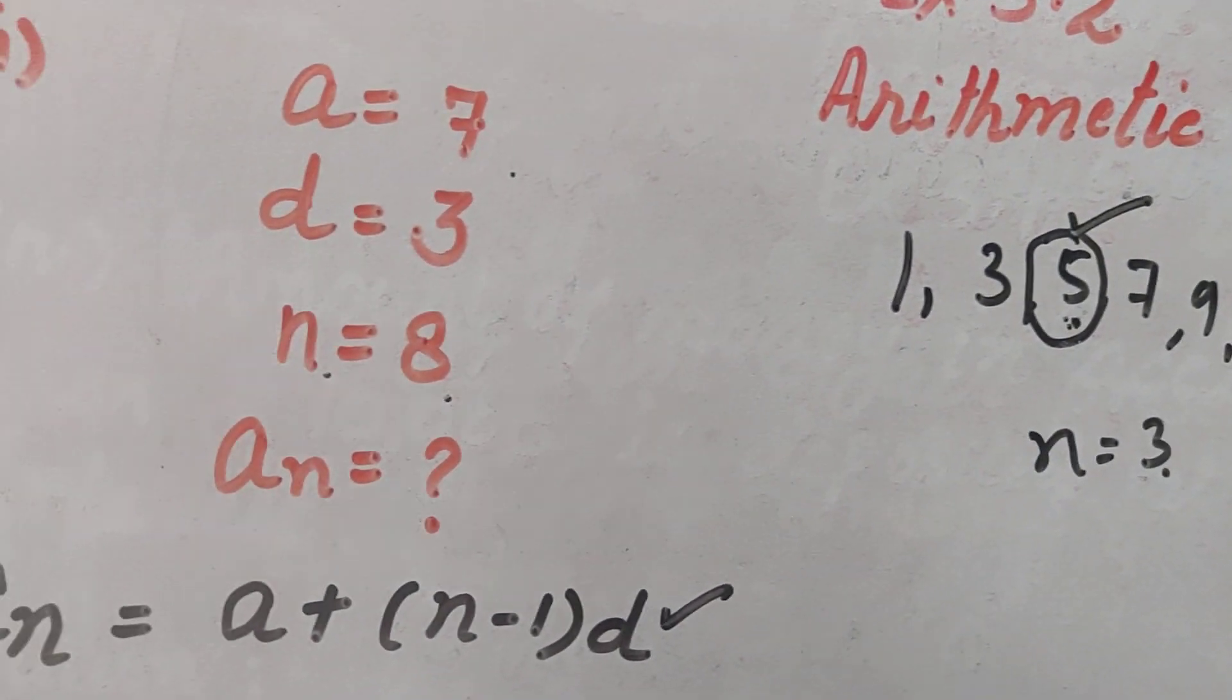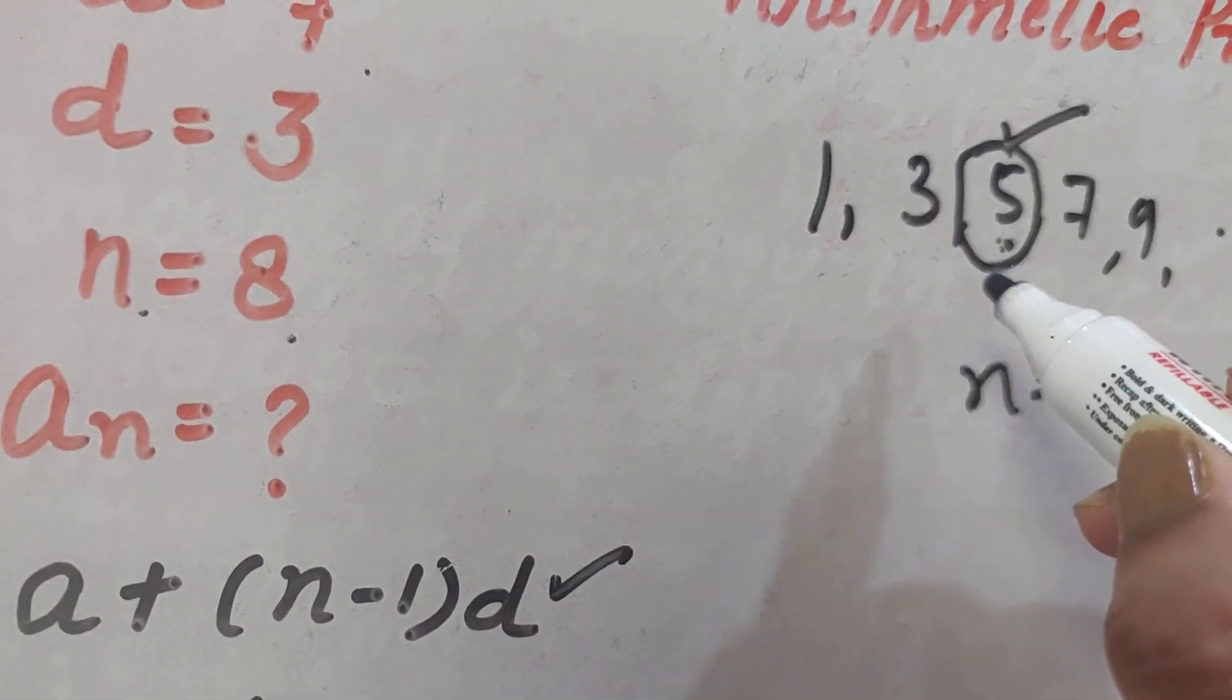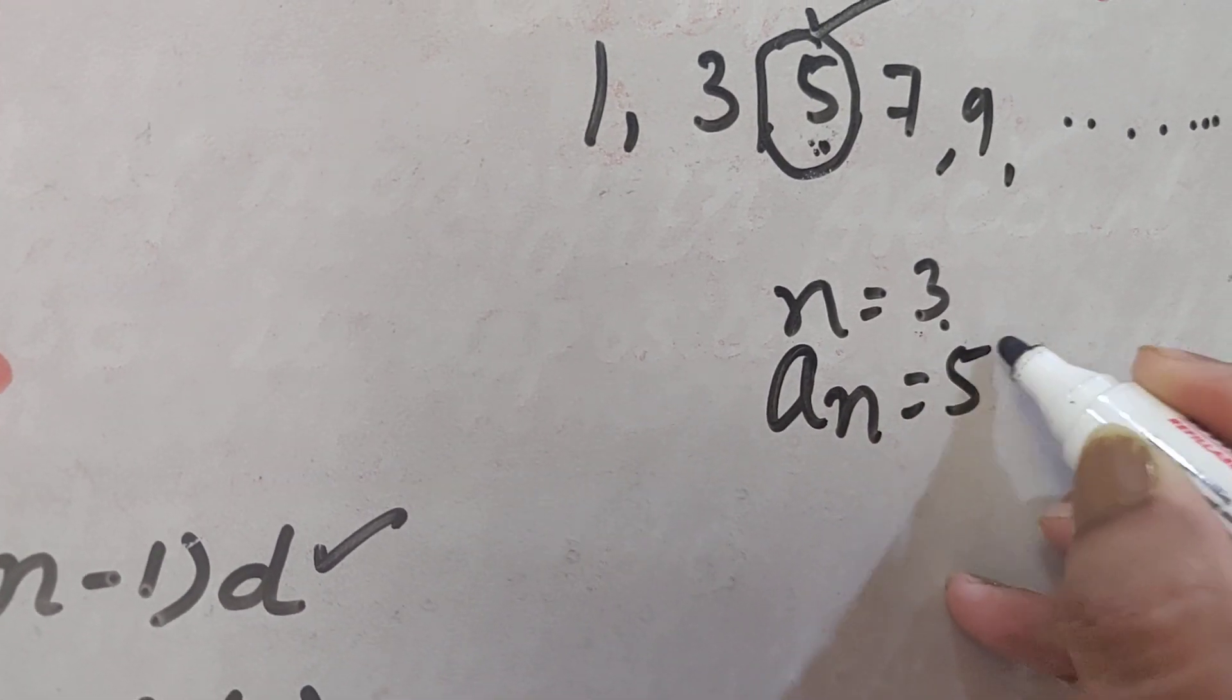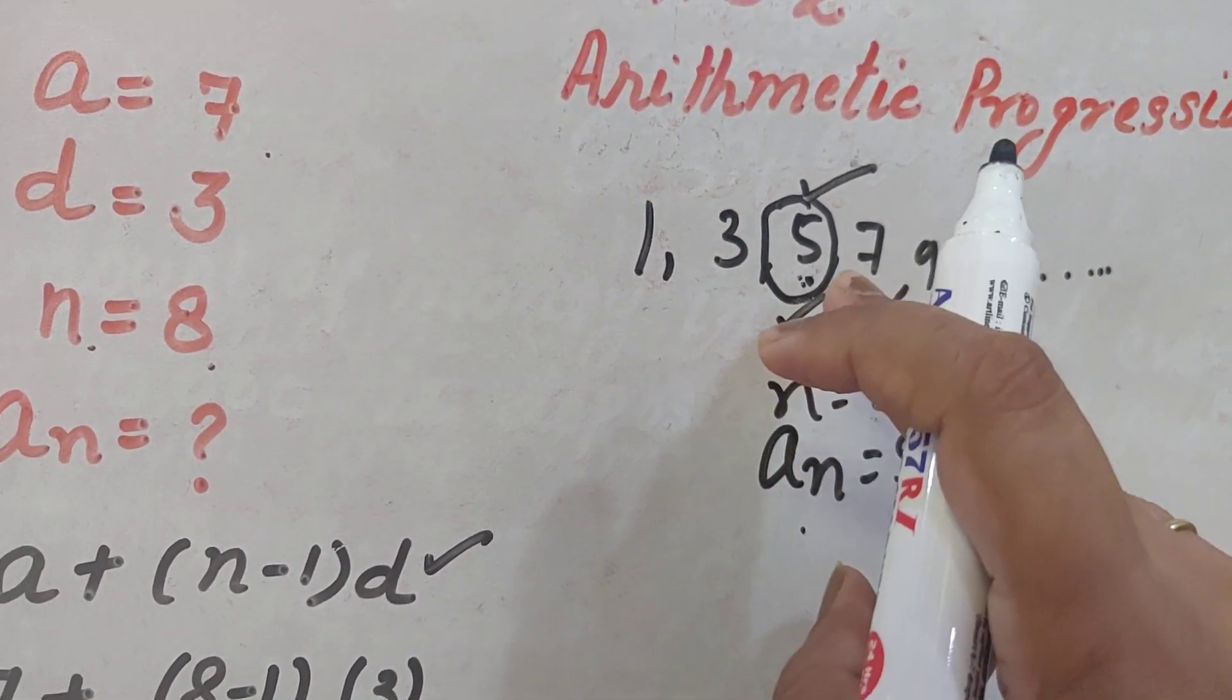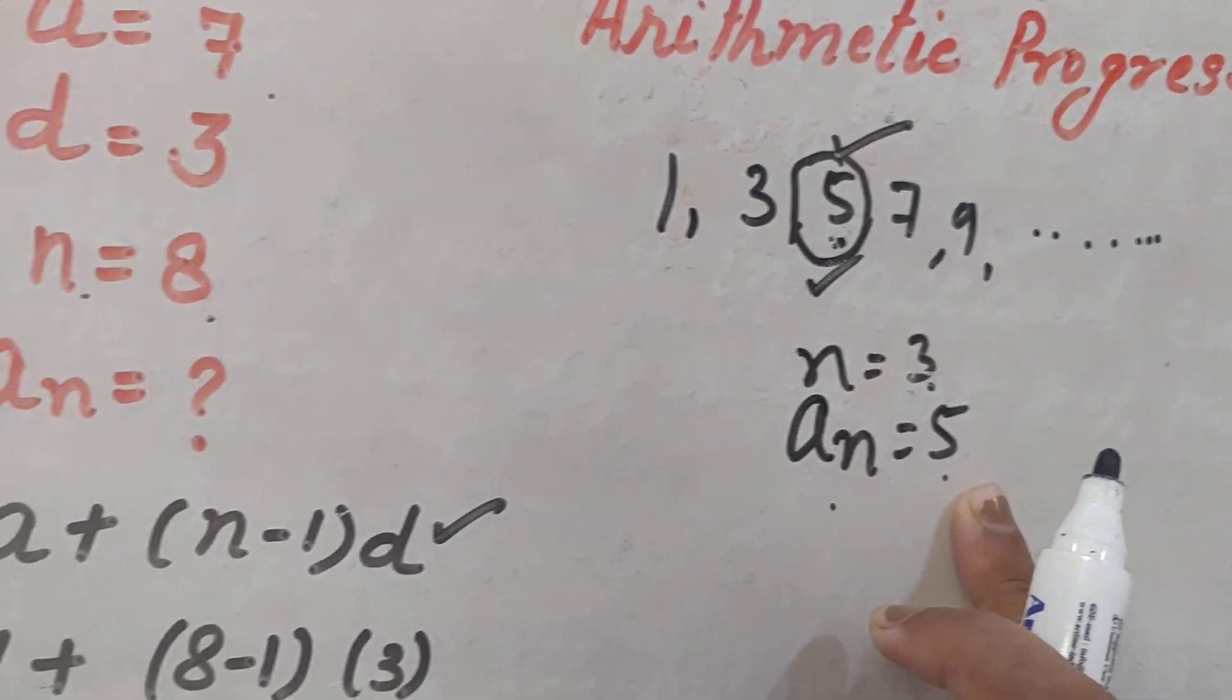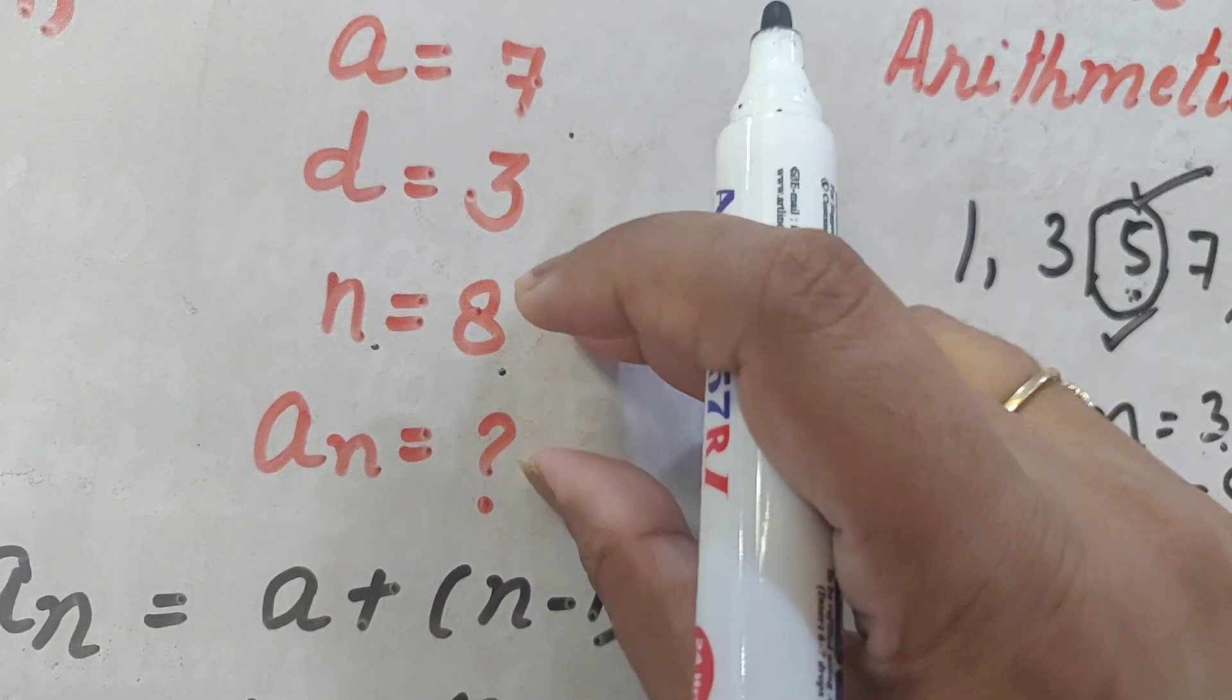So, here N for this term, N is 3 because it is at number 3. So, the number of this term is 3 and AN means the term itself. So, here AN is 5. AN means what term is there at that number and N means the number. At number 3, which term is there? Number 3, term is 5. You must know the meaning of N and AN, what this signifies.